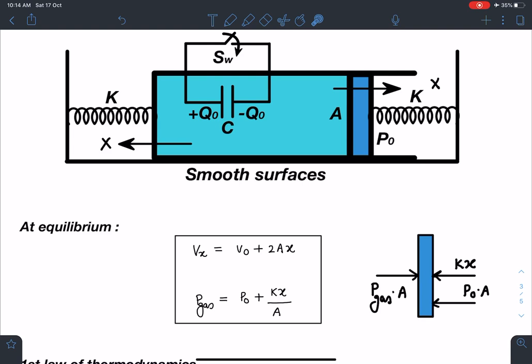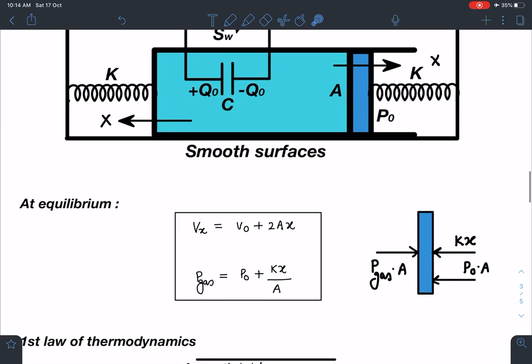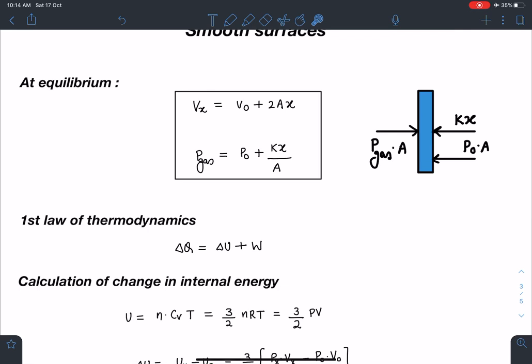Here after this we are going to use the first law of thermodynamics. So heat rejected or supplied by the gas, change in internal energy, and this is the work done by the gas. So let's see how exactly we can calculate this change in internal energy.